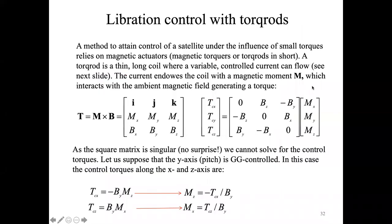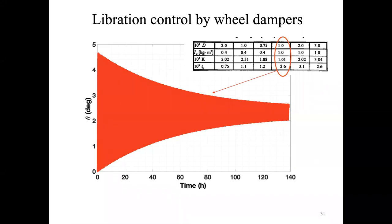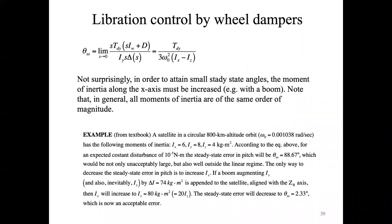Yesterday we started the active control of the spacecraft using some devices. In particular, we introduced the wheel dampers and the magnetotorques — although the magnetotorques were only introduced briefly, so we need to go into detail to explain how those work. Today we are also going to see for the first time the thrusters.